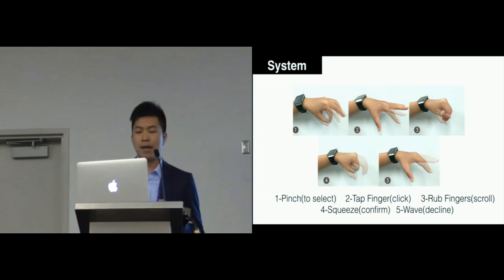For example, the tap finger can be mapped to clicking a button, and the rub fingers could be mapped to scrolling a page. Fine-grained gestures require the least motion to perform so that they will cause really little physical or mental effort to the users.